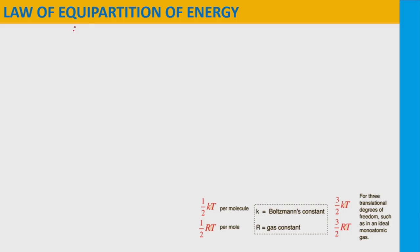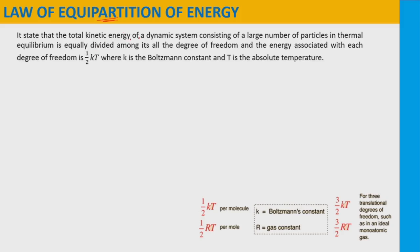The law of equipartition of energy — equipartition indicates equal distribution of energy. If you have a gas system which is a dynamic system where all the molecules are constantly moving with different velocities, it is found that the energy is equally distributed among all the degrees of freedom and this system is at thermal equilibrium. We can state it as: the total kinetic energy of a dynamic system consisting of a large number of particles in thermal equilibrium is equally divided among all its degrees of freedom, and the energy associated with each degree of freedom is half kT, where k is Boltzmann's constant and T is the absolute temperature.